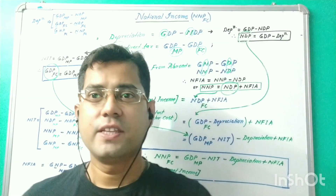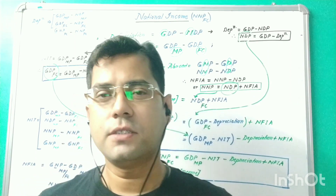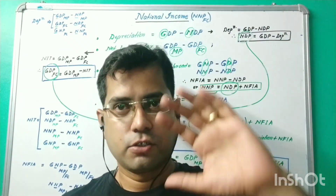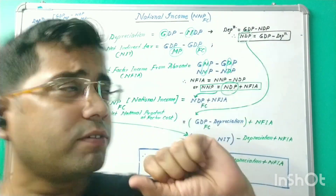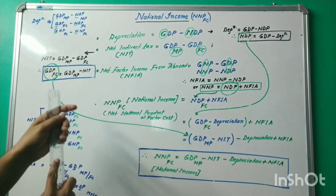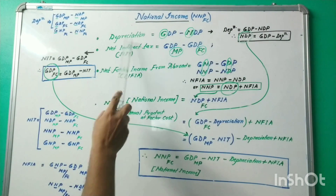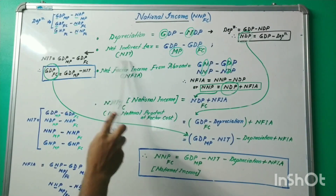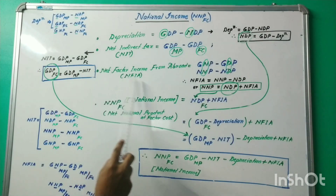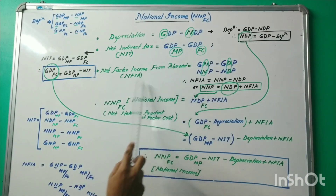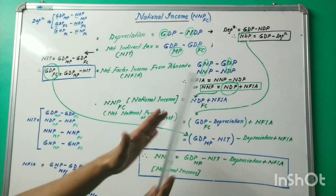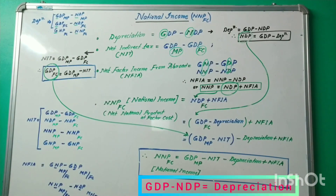There are a number of formulas, but you don't have to go through all of them. You need to remember only these three formulas. Number one: depreciation. Number two: NIT, that is net indirect tax. Number three: net factor income from abroad, that is NFI. So let's start with number one, that is depreciation.